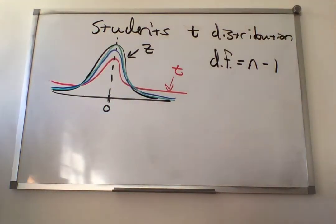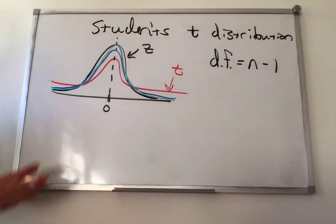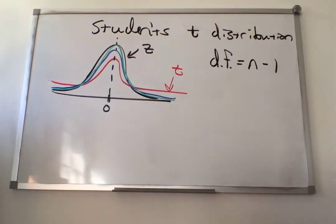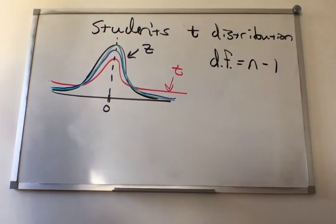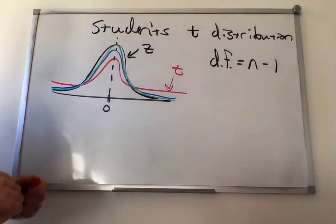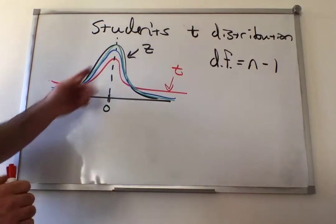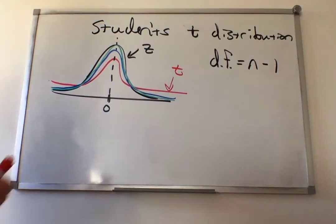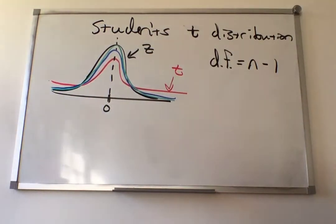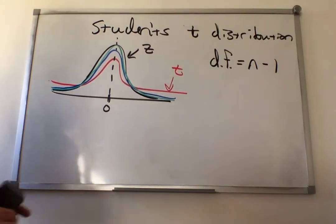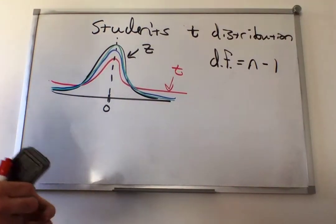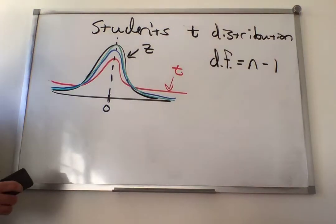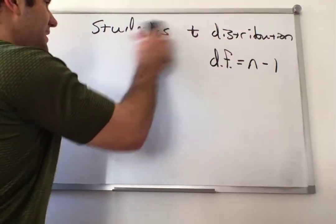I know my visual here is poorly drawn and cluttered. If you look in the book in section 8.3, they do have a very nice picture of this showing what higher degrees of freedom do. So instead of finding z-scores, we can find t-scores.